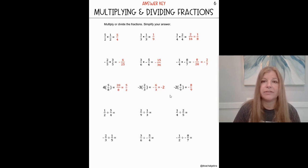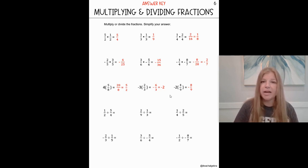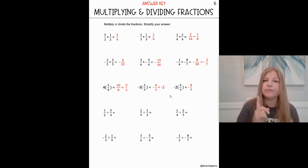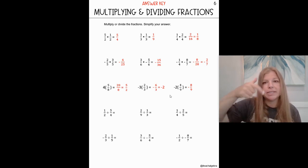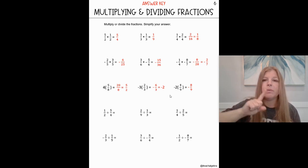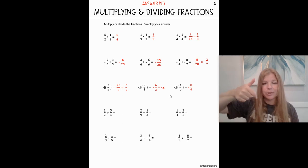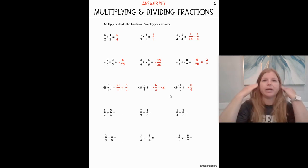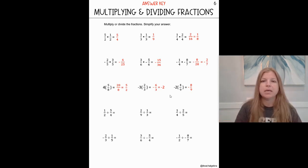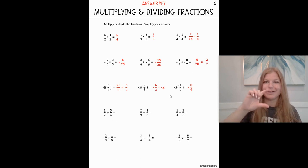And now the last six: dividing fractions. When multiplying we multiply straight across, but when we divide fractions, we multiply the first fraction by the reciprocal of the second fraction. Let me repeat that: when we divide fractions, we multiply the first fraction by the reciprocal. Reciprocal means we take our fraction and flip it upside down — the numerator and denominator switch spots. We take the first fraction, multiply it by the reciprocal of the second fraction, and then we just multiply.